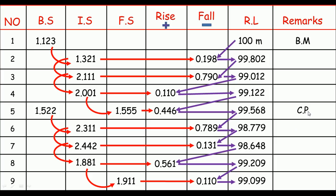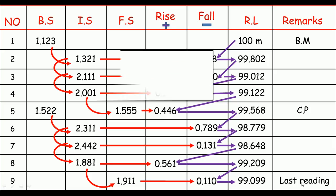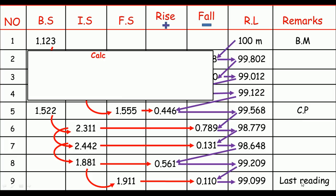I just realized — in the remarks column, CP stands for change point, and this is the last reading. Now the calculation or solution of the rise and fall table is done. But to be sure the calculation is correct, we do a little check — this is called the calculation check. Remember there are always two types of calculation check for the rise and fall table, and one of these two checks must satisfy the calculation. Let me try the first check.